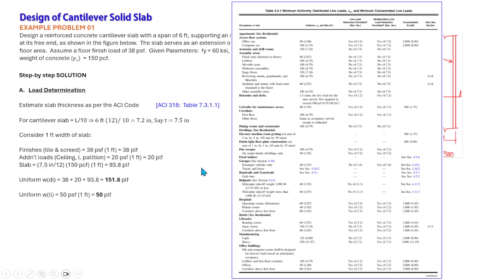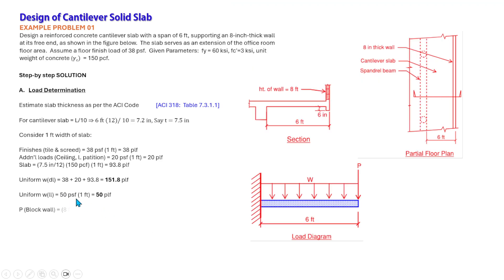The uniform live load is not specified in the problem, so we refer to the table from ASCE 7. For office buildings, the occupancy live load requirement is 50 PSF, so we use 50 PLF for the live load. For the block wall concentrated load: wall height = 8 feet, unit weight = 79 PSF, giving a concentrated load of 632 pounds at the free end.